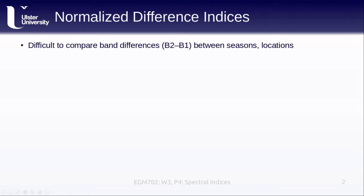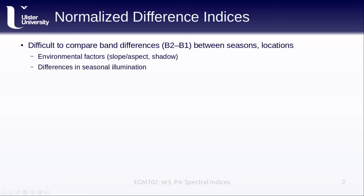For example, we discussed how it's difficult to compare band differences. If we have band 1 and band 2, and we take the difference between band 2 and band 1, it's difficult to compare those differences between different seasons or even different locations within an image. This is because of environmental factors such as slope and aspect, potential shadow — either cloud shadows or topographic shadows — but also differences in seasonal illumination.